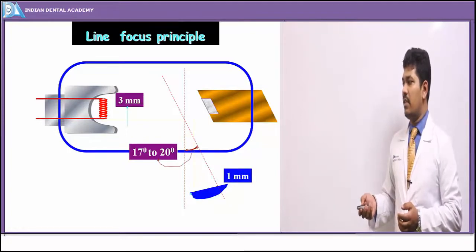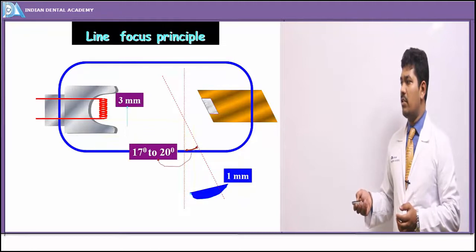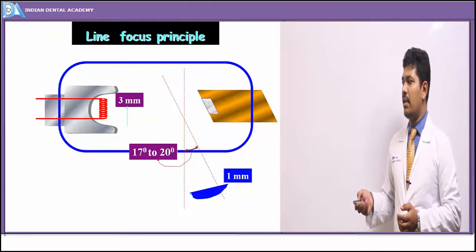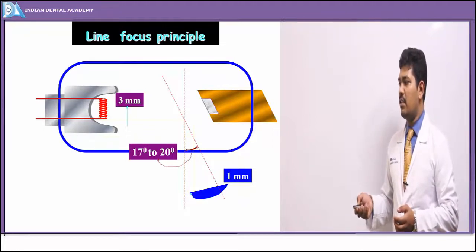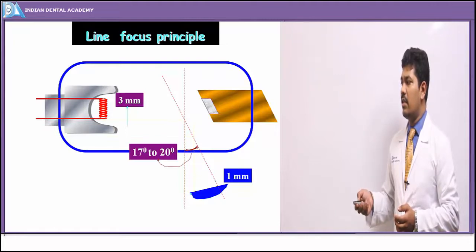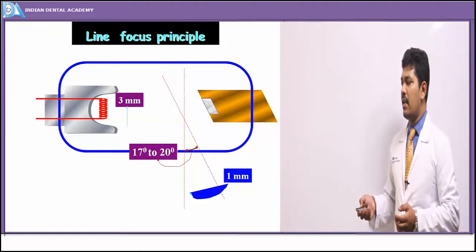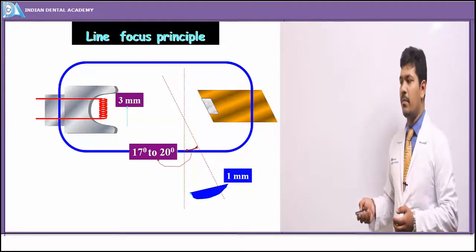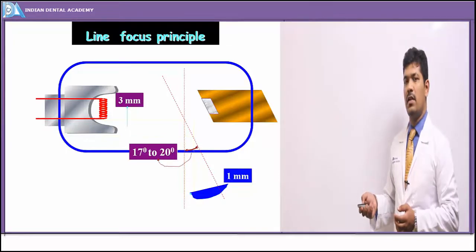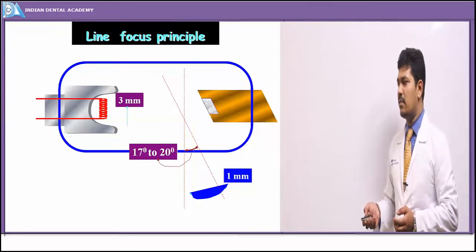As shown in the diagram, the actual focal spot is around 3 mm in dimensions, and because of the angulation of 17 to 20 degrees, the effective focal spot is just about 1 mm — taking into consideration both heat loss and sharper image detail.